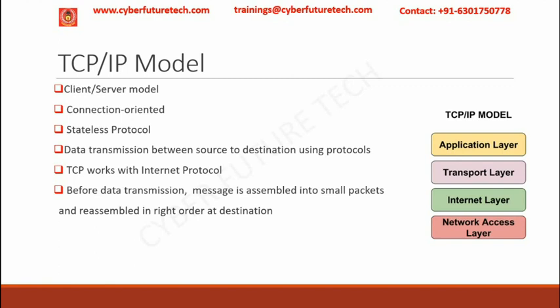TCP manages how a message is assembled into small packets before data transmission and are again reassembled in sequential order at the destination. IP defines how to address and route each packet to deliver the message to the right destination.